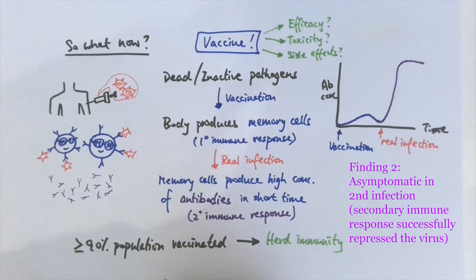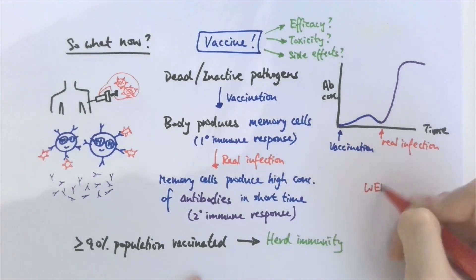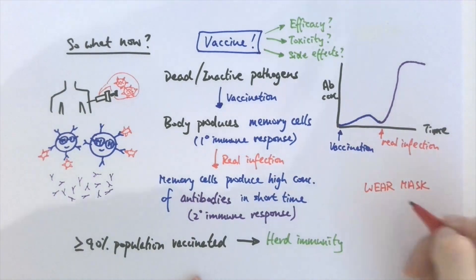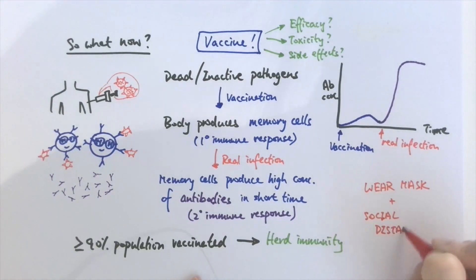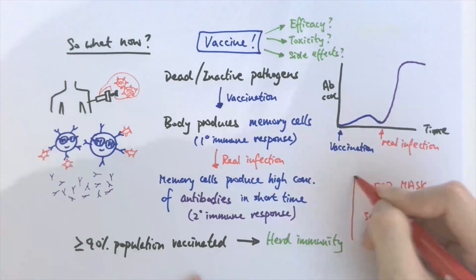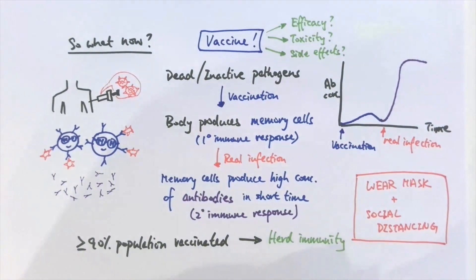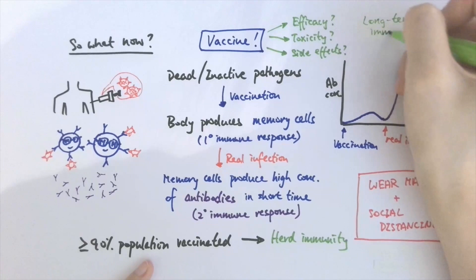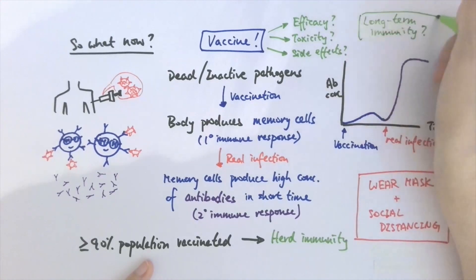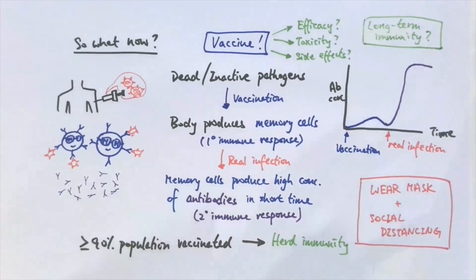However, being asymptomatic doesn't mean he cannot transmit the virus to others, so recovered patients should still wear a face mask and exercise social distancing like non-infected people. The vaccines being developed also need to be tested to see if they provide long or short-term immunity, to help with designing the vaccination program. In any case, there is some very promising research being done, so let's hope an effective vaccine will be developed in the near future.